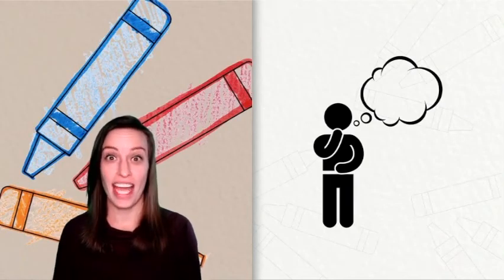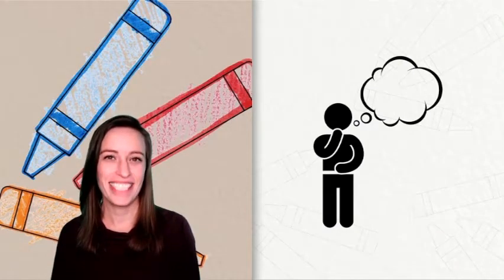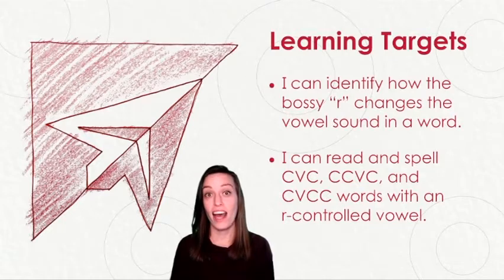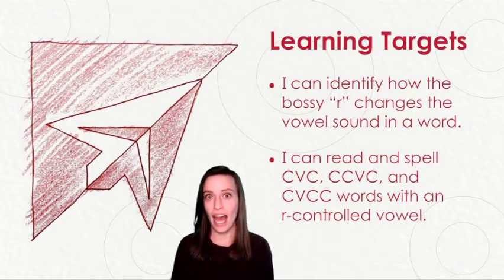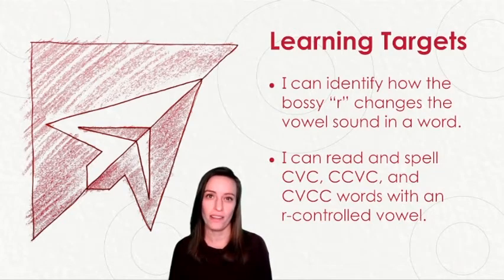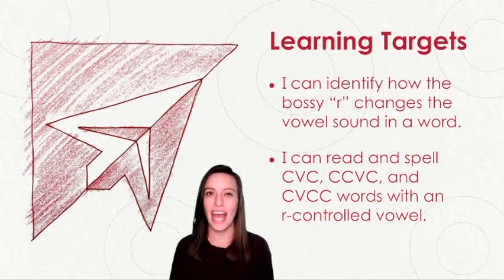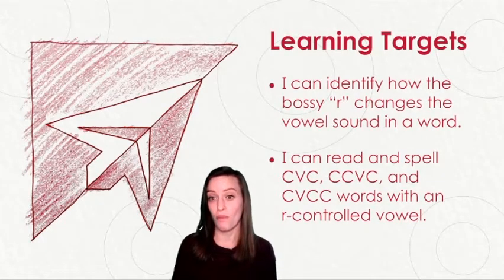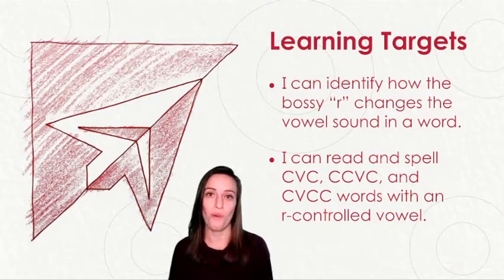Let's get our thinking caps on. Here we go! Here are today's learning targets. I can identify how the bossy R changes the vowel sounds in a word. And I can read and spell CVC, CCVC, and CVCC words with an R controlled vowel.